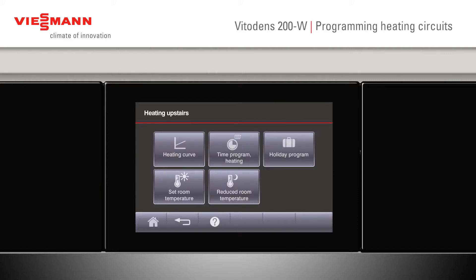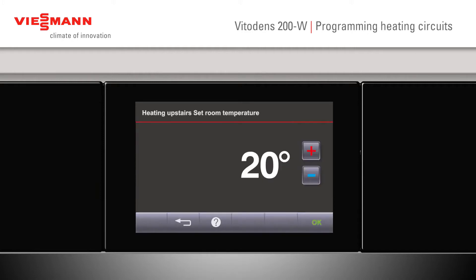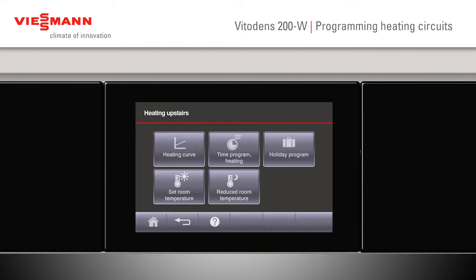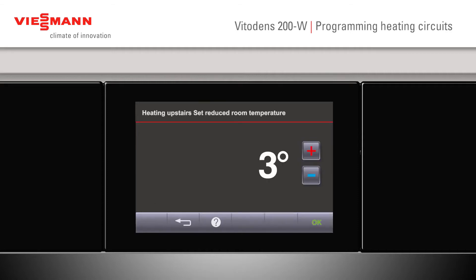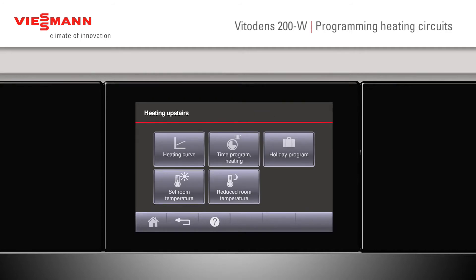Room temperature for that circuit can be changed here as well. Press OK to confirm. We've now set our room temperature. The same applies to reduced mode — scroll up or down and press OK when you're happy.